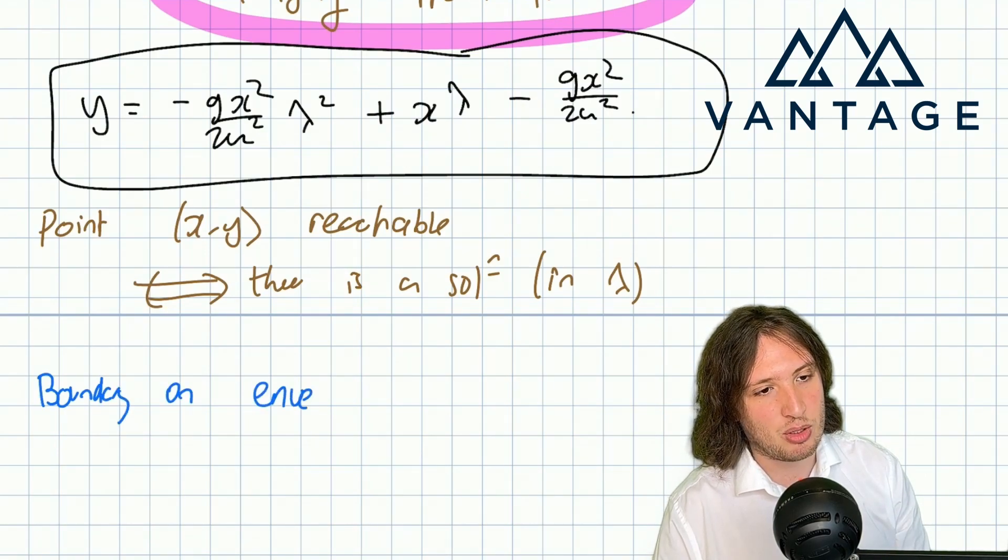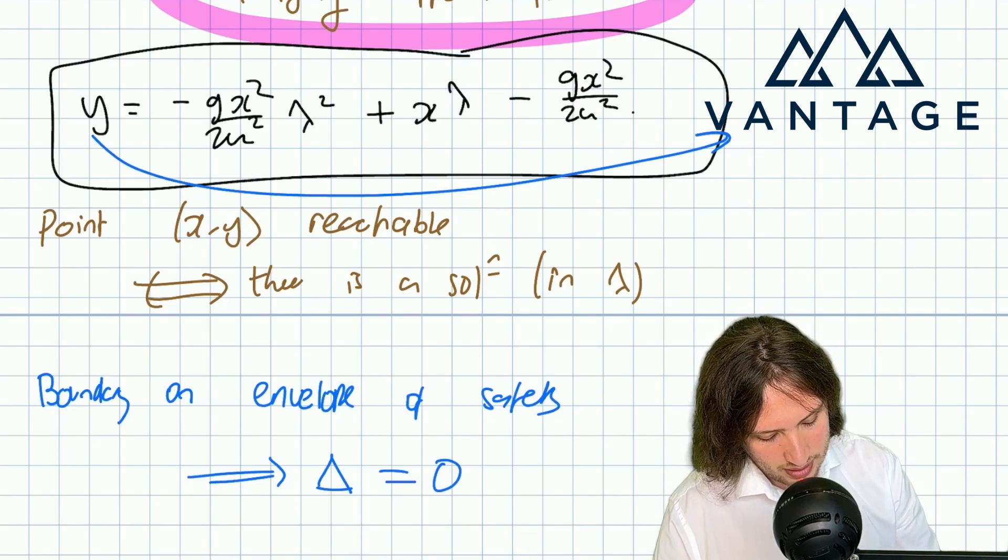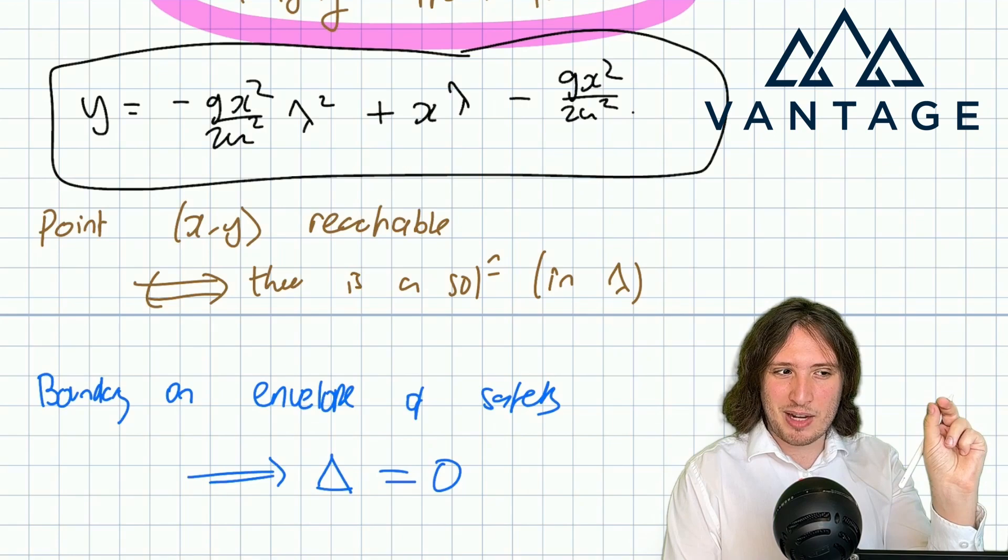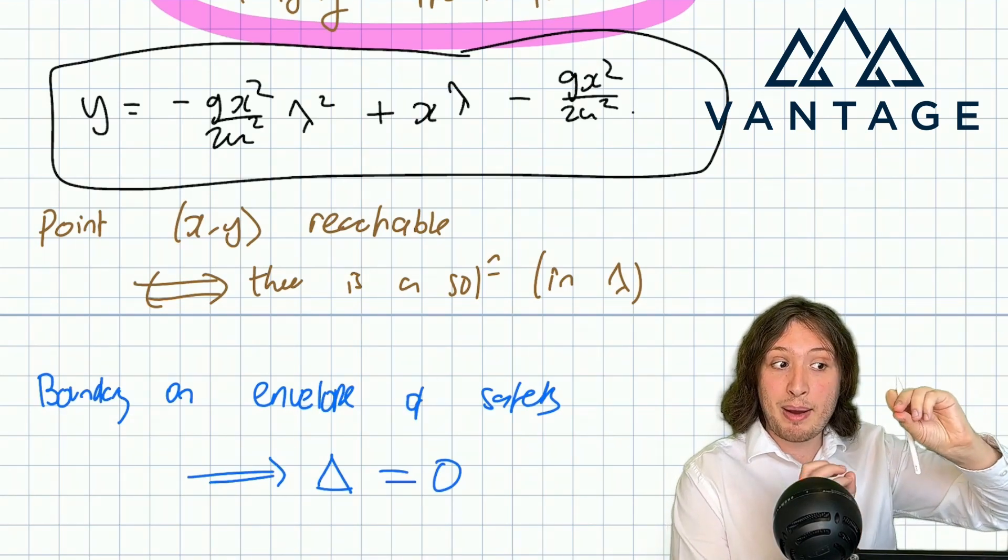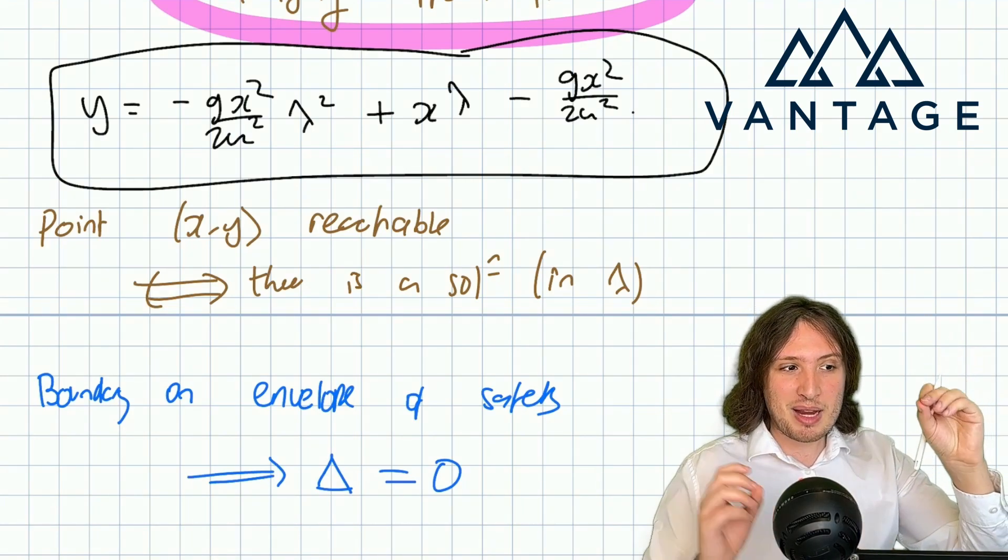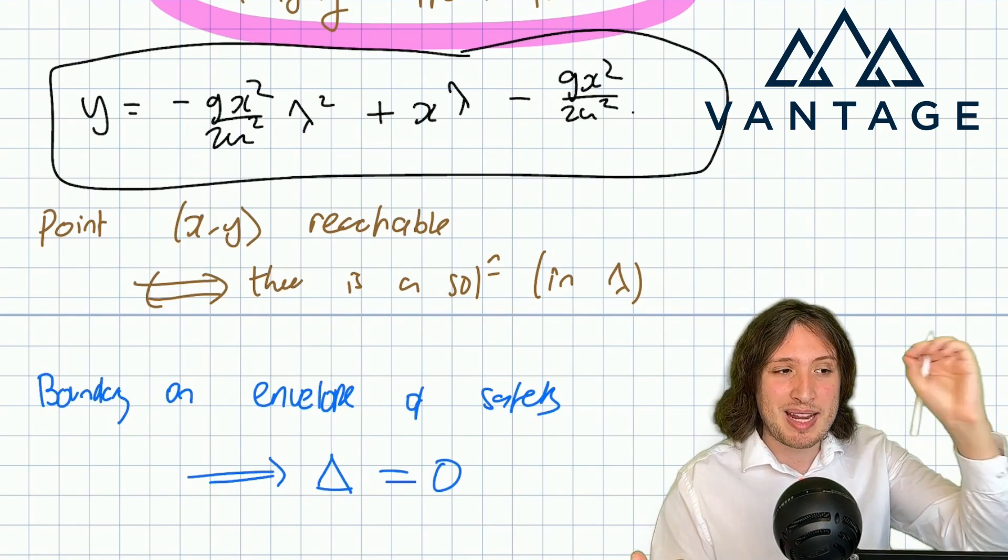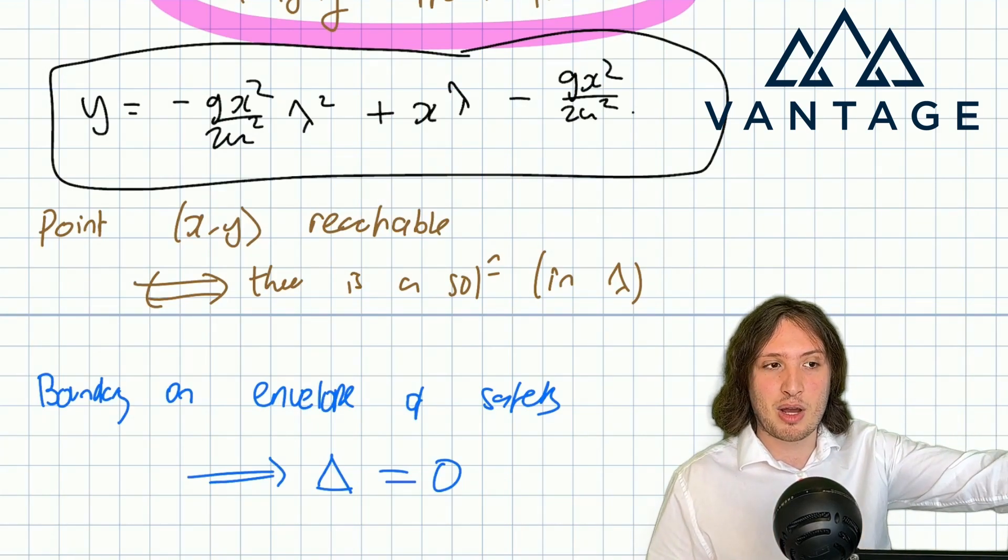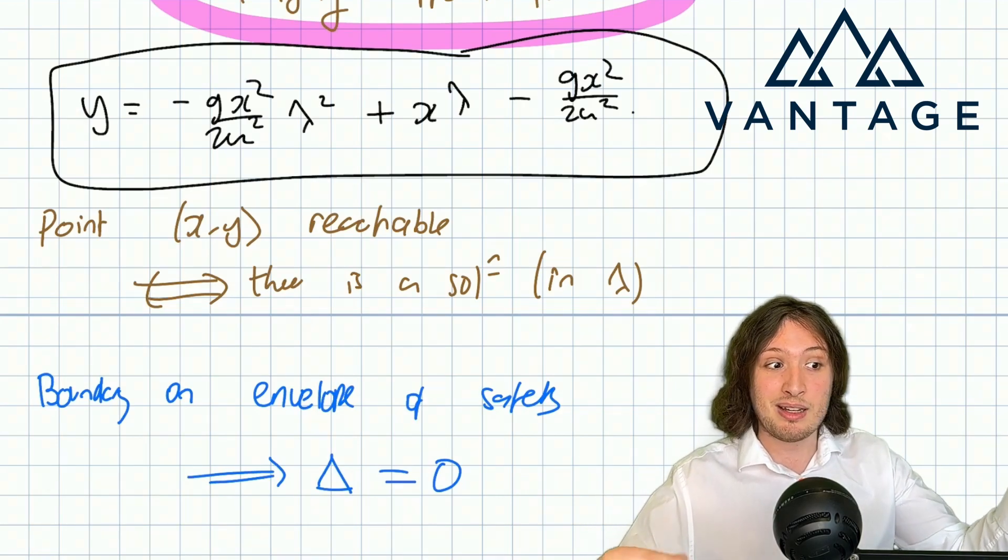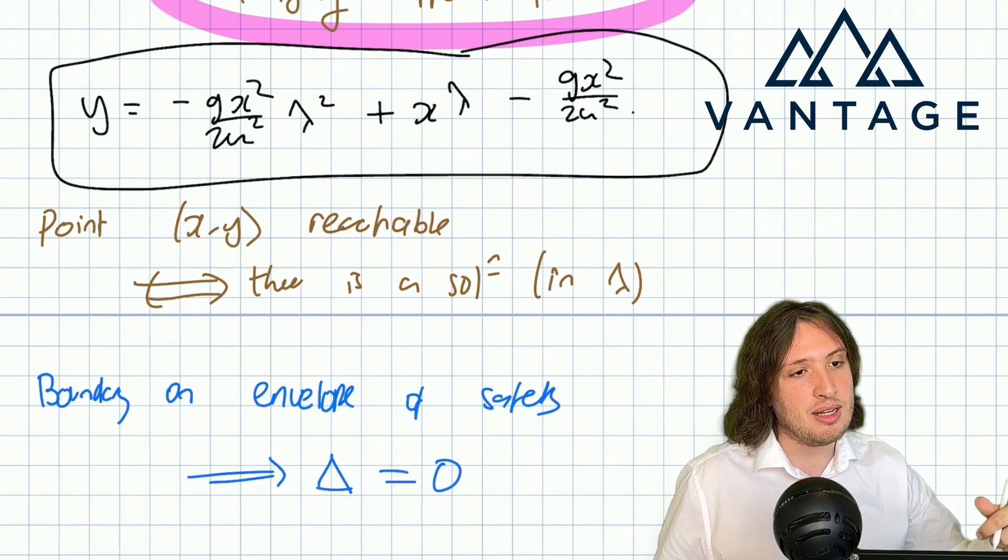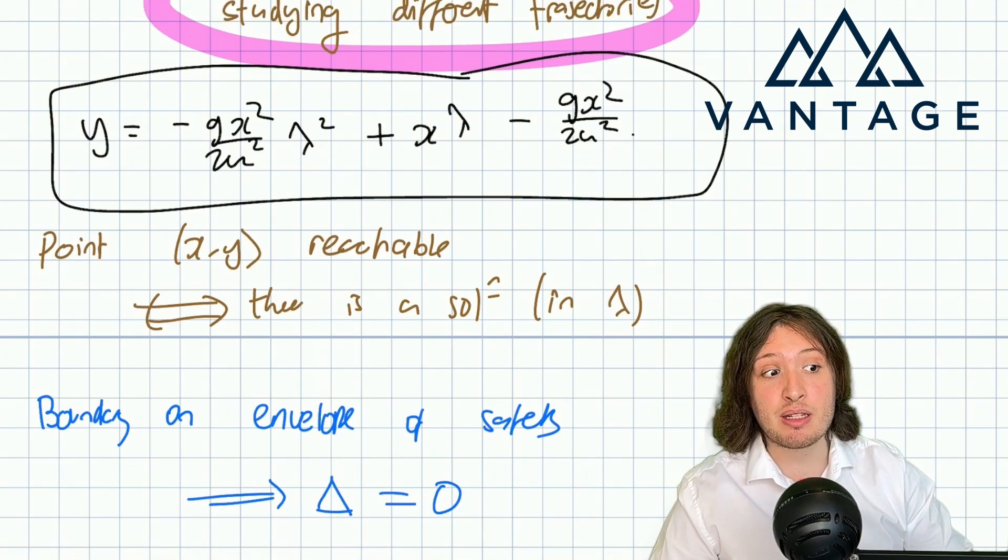If I'm on the boundary, right on the verge of being reachable or not reachable, then the discriminant of the quadratic in λ should be zero. If I'm right on the boundary of the envelope of safety, even by moving x or y infinitesimally small it's possible to go outside the envelope and not be reachable. If my quadratic is right on the verge of having no solutions, the discriminant must be zero. Notice that to go through a particular point there are at most two values of λ corresponding to two angles of projection.